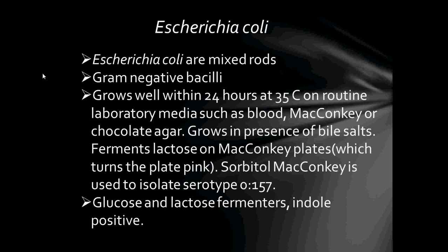The first bacteria we are going to look at is Escherichia coli. Escherichia coli are mixed rods; they are Gram-negative Bacilli. They grow well within 24 hours at 35 degrees Celsius on routine laboratory media such as blood, MacConkey, or chocolate agar. They also grow in the presence of bile salts. They ferment lactose on MacConkey plates, which turns the plate pink. MacConkey agar is used to distinguish those bacteria that ferment lactose from those that do not.